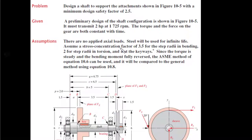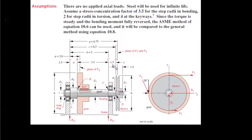The geometries are already given; we could look up static stress concentration factors in the back of the book. Use 3.5 for the step radii in bending, 2 for the step radii in torsion, and 4 at the keyways. Since the torque is steady and the bending moment is fully reversed, we could use the ASME method, but instead we'll use the general method with equations 10.8 so you can compare the two approaches.